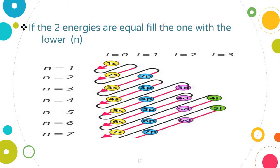If the two energies are equal, fill the one with the lower n first. We can distribute them in the following arrangement. We are going to write the s first from 1s to 7s. Then the p sublevels: 2p, 3p, 4p, 5p, 6p, and 7p. And then 3d, 4d, 5d, 6d, 4f, and 5f.